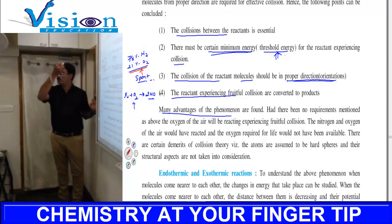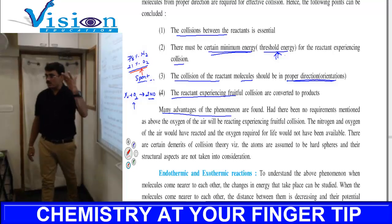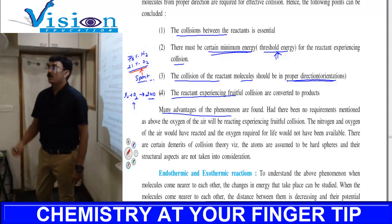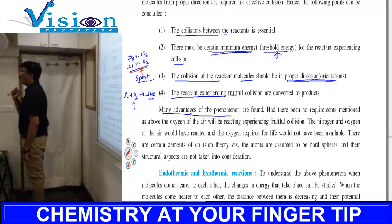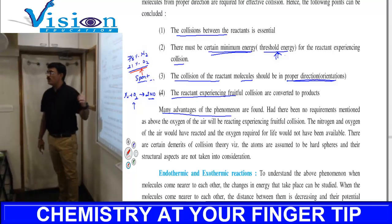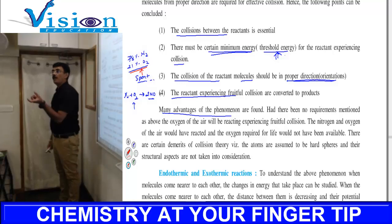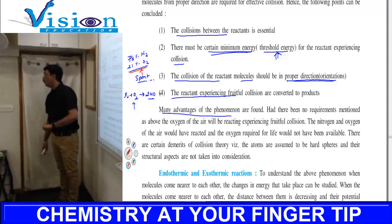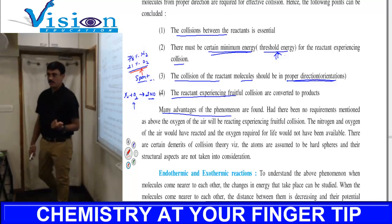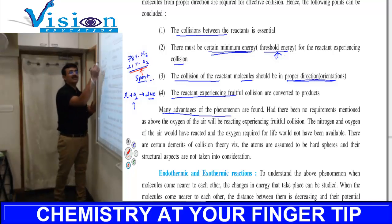Third, collision of reactant molecules should be from proper direction. Fourth, after proper collision, there has to be proper product. So four important points: collision is important, threshold energy is important, proper direction is needed, and then product formation. If you learn collision theory step by step and understand it, it's not difficult.